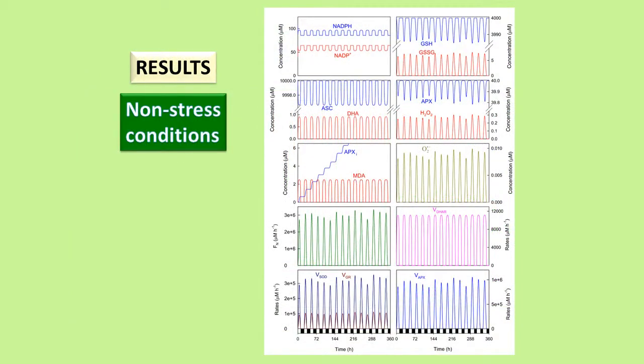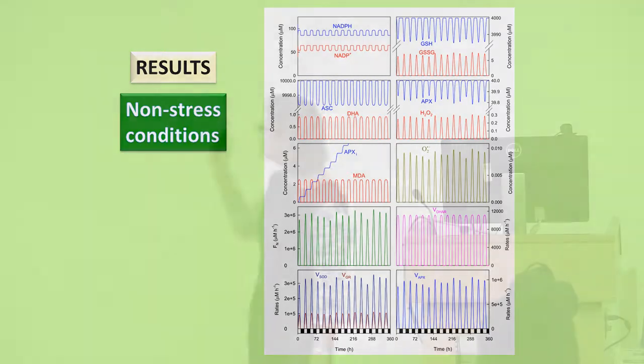This is a run of the model under non-stress conditions. We plot the concentration of the metabolites and enzymatic activities involved in the pathway. The most important difference with respect to previous models in the literature is that we have obtained an oscillatory behavior. Superoxide radicals and hydrogen peroxide, for example, show maximum concentrations under non-stress conditions below micromolar.